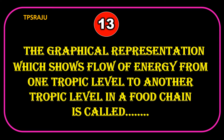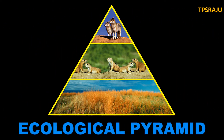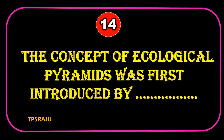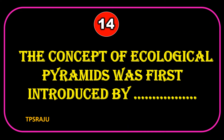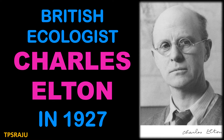The graphical representation which shows flow of energy from one trophic level to another trophic level in a food chain is called an ecological pyramid. The concept of ecological pyramids was first introduced by British ecologist Charles Elton in 1927.